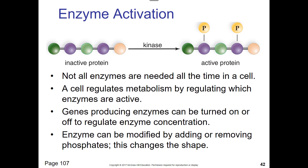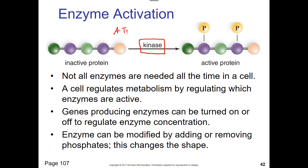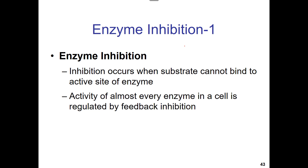Some enzymes are off by default and need to be activated. Kinases — you can see 'kine' for kinetic — are an entire family of proteins that take ATP and phosphorylate their substrate, giving it energy so it can go do some work.